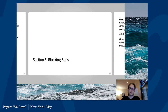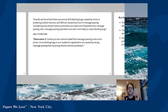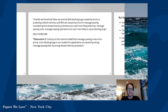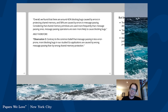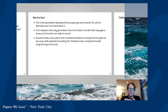Let's dive into the blocking bugs. Overall, they found about 42% of blocking bugs caused by errors in protecting shared memory, and 58% caused by errors in message passing. Considering shared memory primitives are used much more frequently than message-passing ones, message-passing operations are even more likely to cause blocking bugs. Therefore, contrary to the common belief that message passing is less error-prone, more blocking bugs in their study are caused by wrong message passing than by wrong shared memory protection. This is the big takeaway the paper got some traction for — basically saying Go's channels aren't as safe as advertised.